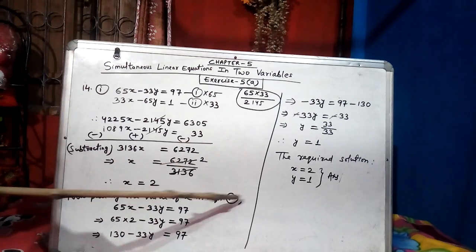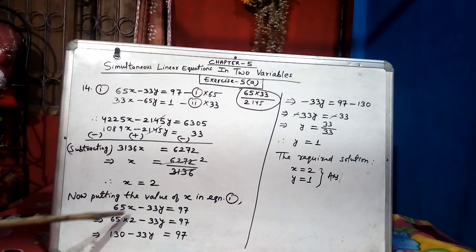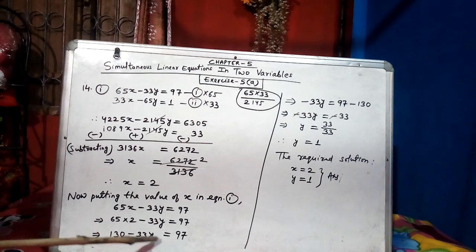Now, putting the value of x in equation 1. Equation 1 is here. Same thing I wrote here. Now, I have to put the value of x as 2. 65 twos are 130. Rest are all same. Minus 33y equal to 97 also is same.